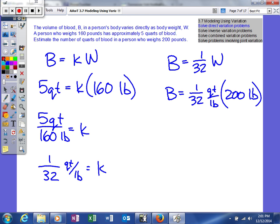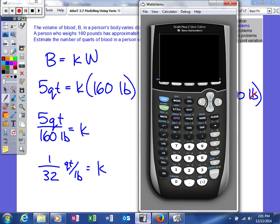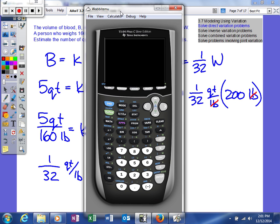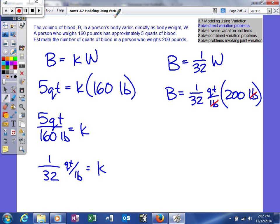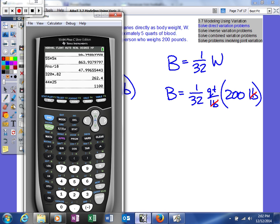As you can see, our units will cancel. I'll use my calculator. 200 divided by 32. So we get B equals 6.25 quarts.